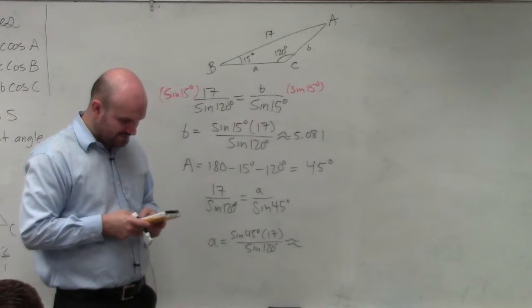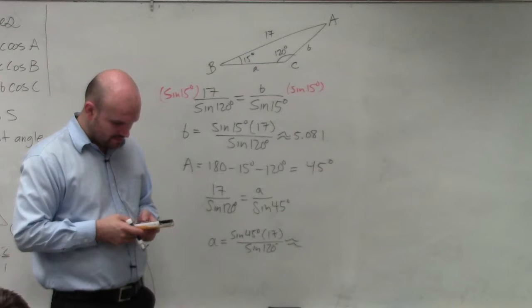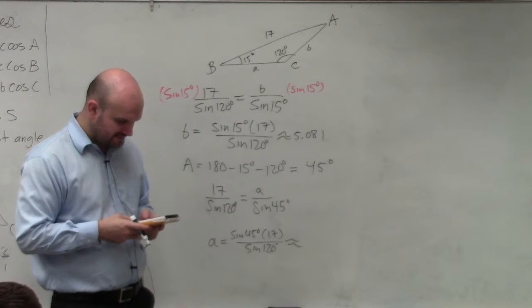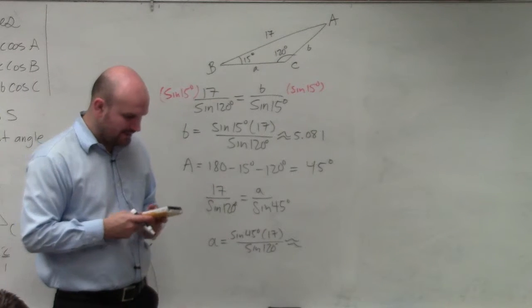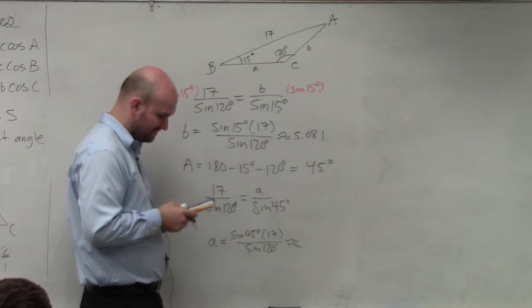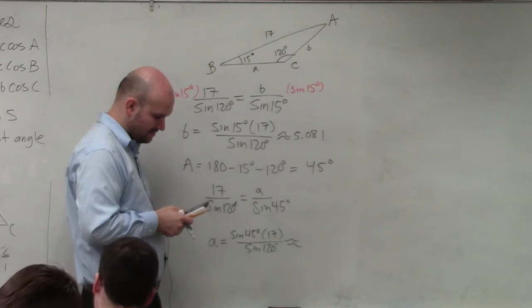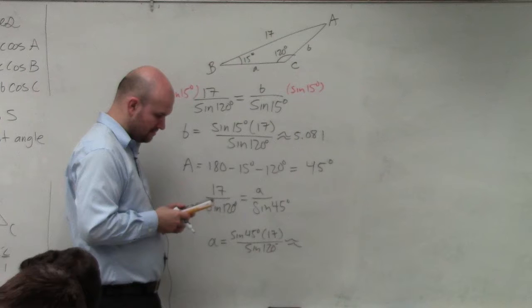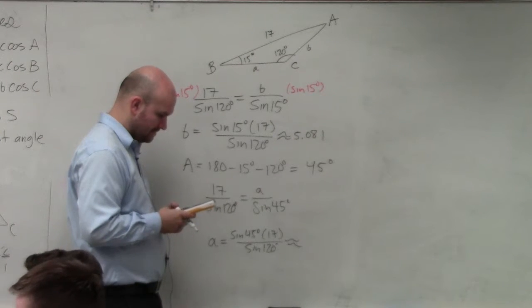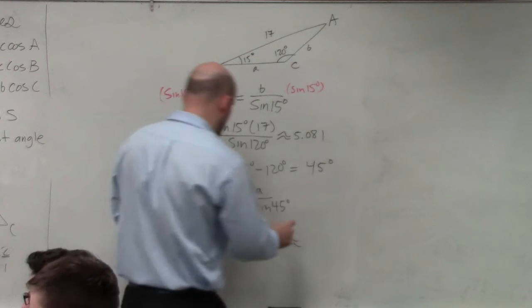So type that in my calculator, sine of 45, close the parentheses, times 17, divided by 120, sine of 120. And I get 13.880.